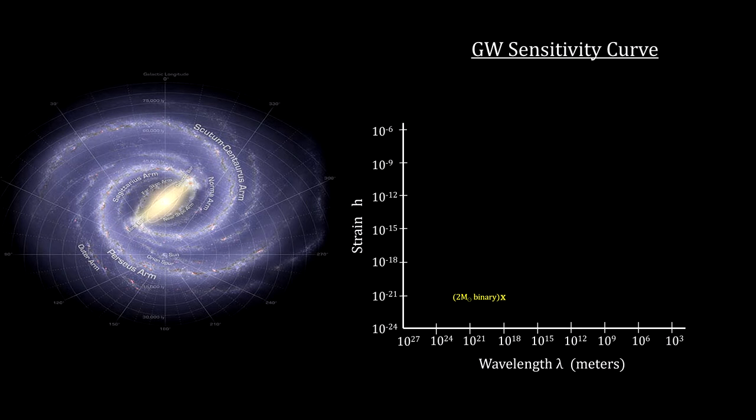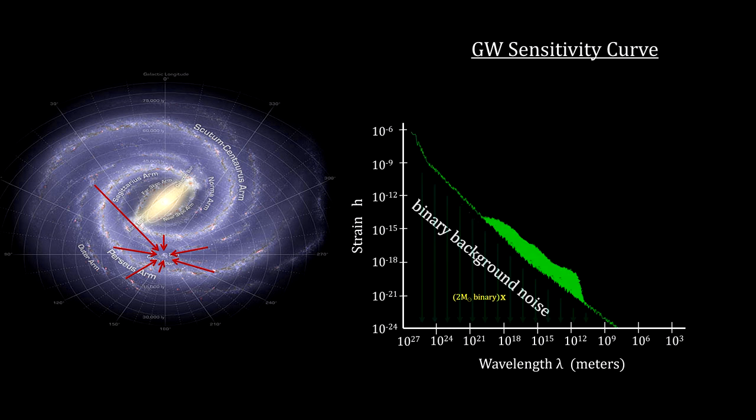Binary systems like this one are plentiful and all around us. There are literally billions of them sending gravitational waves our way from every direction. But the gravitational waves they create are weak and totally indistinguishable from one another. They just wind up contributing to a background noise level.